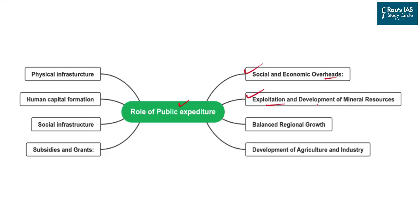Government expenditure also helps in the exploitation and development of mineral resources, because certain mineral resources require exploitation at very high cost. This was seen during the 1950s, 60s, and 70s when it comes to mineral resources such as coal and petroleum oil.